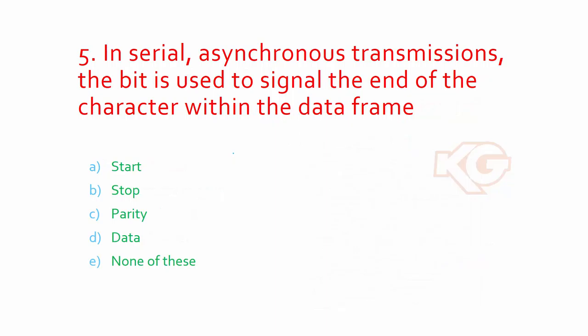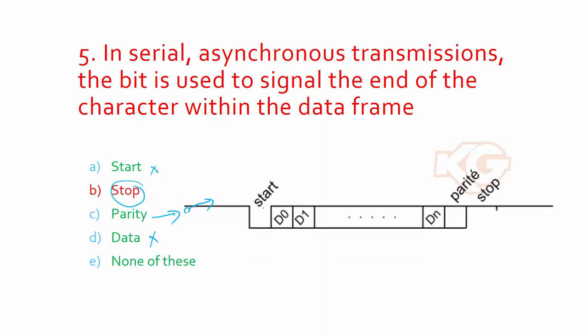In serial, asynchronous transmissions, which bit is used to signal the end of the character within the data frame? You can remove start and data. Parity is used for verification. So the only option which is coming close is the stop bit. Here comes the start of the data frame. The actual data is residing under D0 to DN. The parity bit is for verification, and stop is the one which is asked in this question.